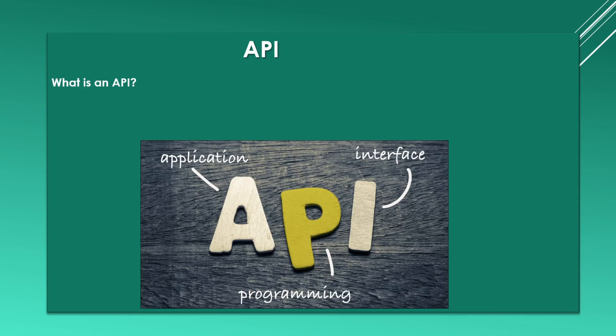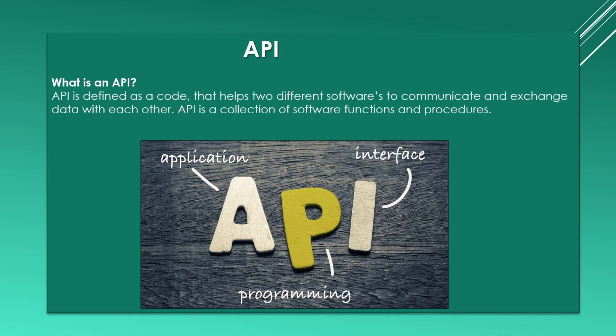API can be defined as a code that helps two different software to communicate and exchange data with each other. API is a collection of software functions and procedures.